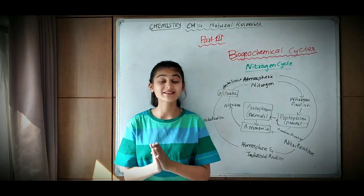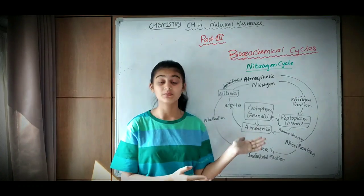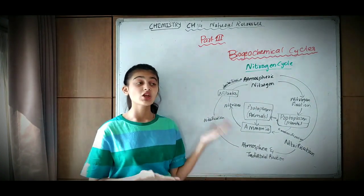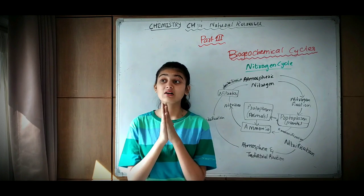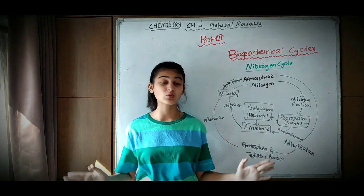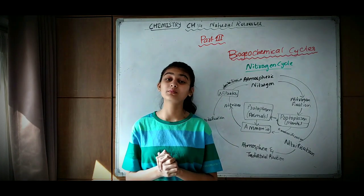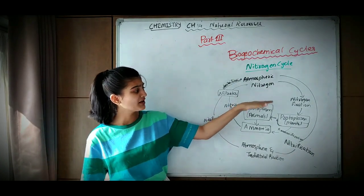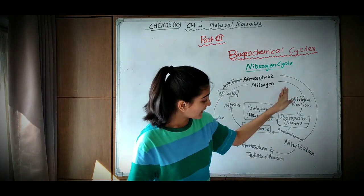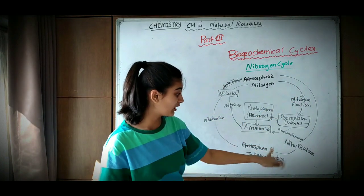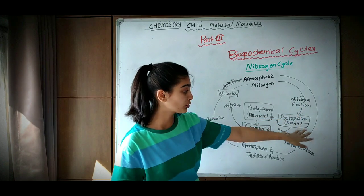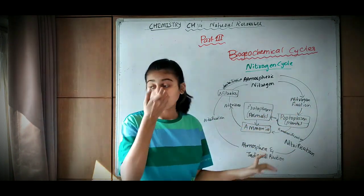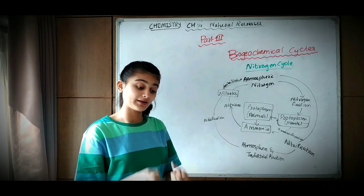Let's get started with the nitrogen cycle. This is basically how the nitrogen cycle looks. First of all, 78% of the atmosphere is made up of nitrogen. Atmospheric nitrogen gets converted into the protoplasm in plants by nitrogen fixation. What happens is the rhizobium bacteria